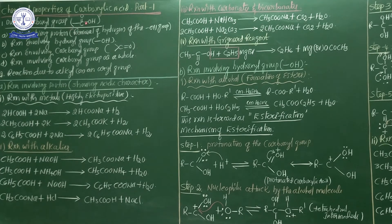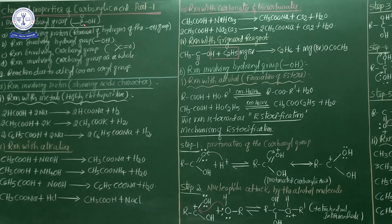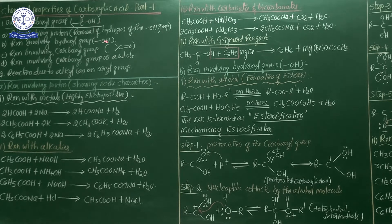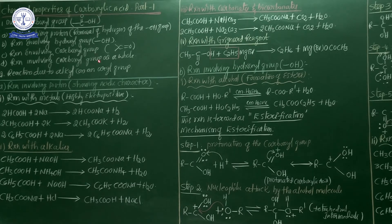There are different types of groups present in the carboxylic acid. In RCOOH, the cleavage between R and the COOH group gives some chemical properties. After cleavage of the alkyl group from COOH, and after that the cleavage of hydrogen from COO minus, some chemical properties are involved. And finally, alkyl group and carbonyl group cleavage also involves some chemical properties.